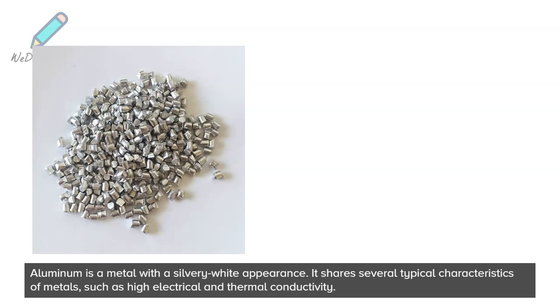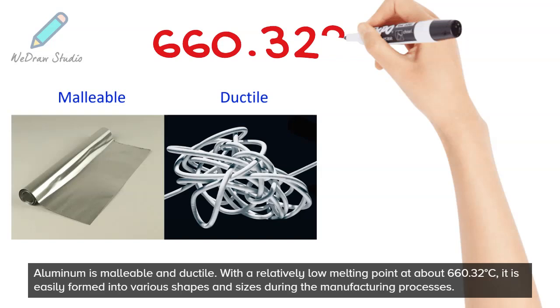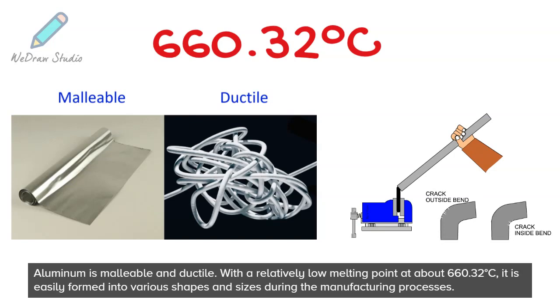Aluminum is malleable and ductile. With a relatively low melting point at about 660.32 degrees Celsius, it is easily formed into various shapes and sizes during the manufacturing processes.